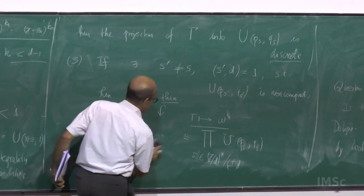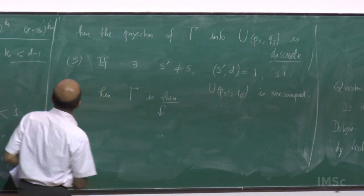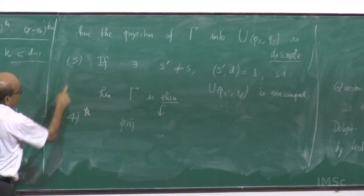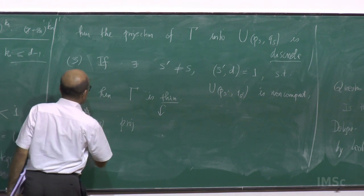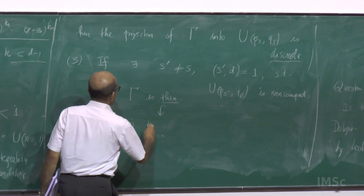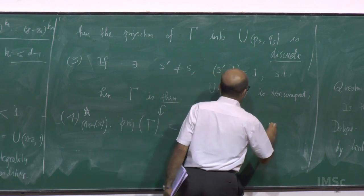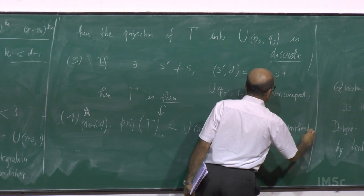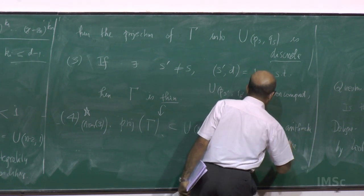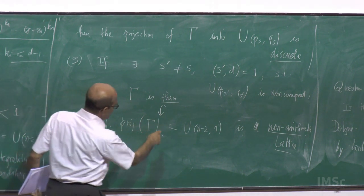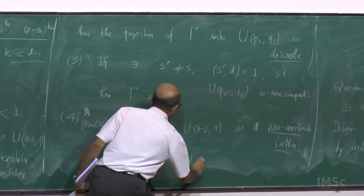But in fact, much more is true — that is actually what they were looking for. This is the main part of the theorem. The projection — if you also assume this condition — the projection of gamma into U(n−2, 1) is a non-arithmetic lattice. So all you need to do to produce non-arithmetic lattices is to produce numbers k_i such that these are integral. But it turns out you cannot find too many of them, and the only non-arithmetic lattices you can get this way are in U(2,1) and U(3,1).